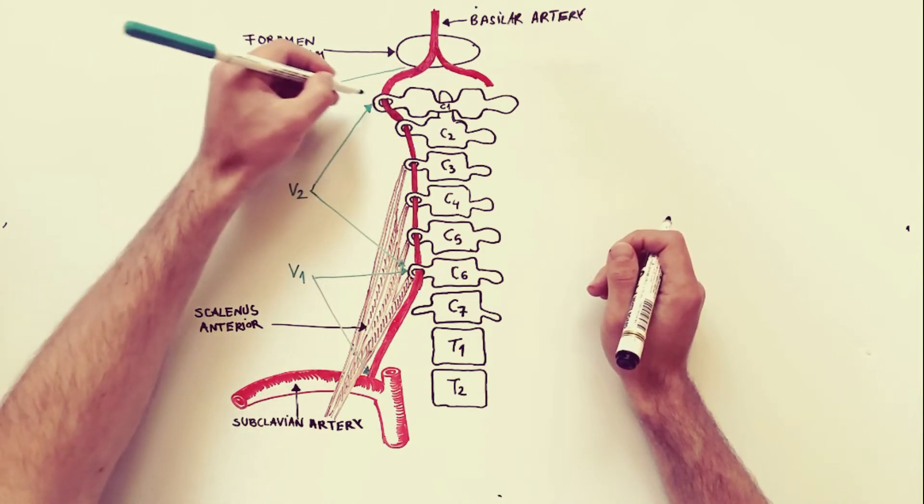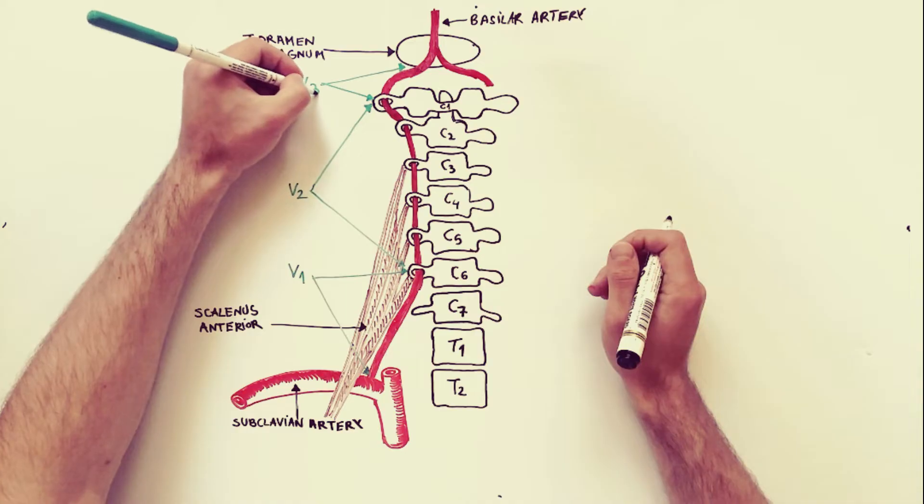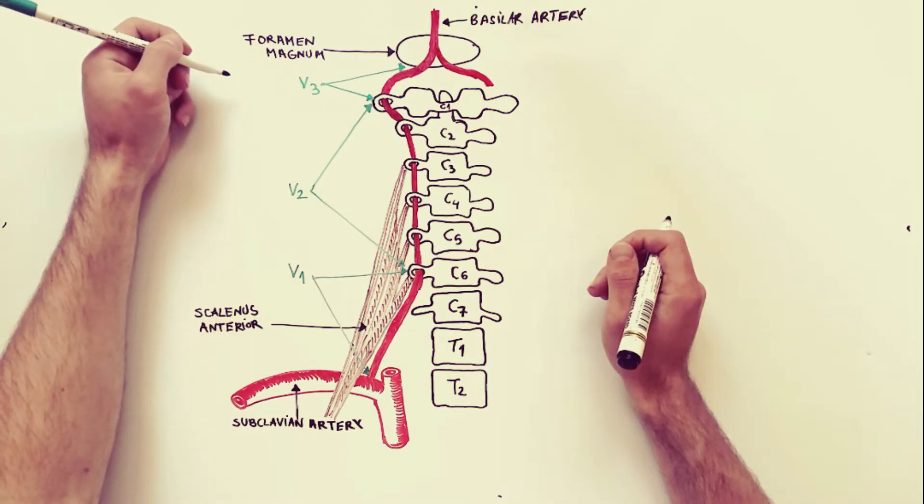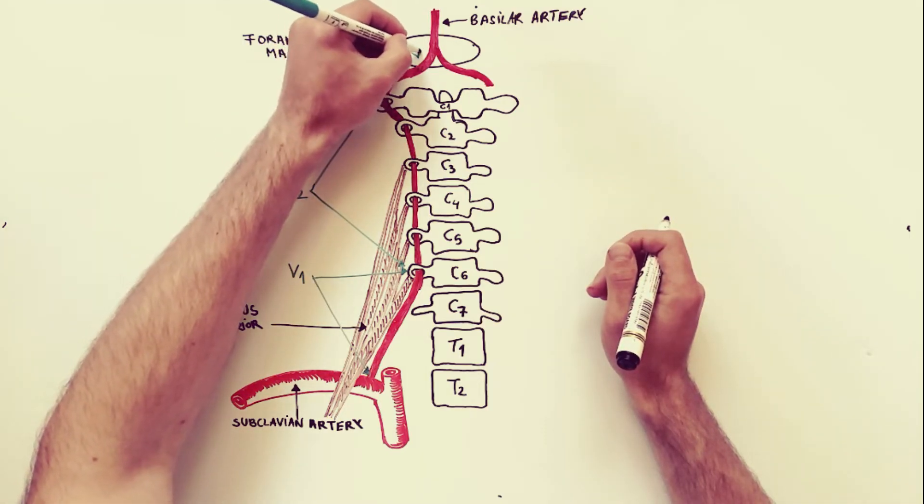The third part, noted with V3, or the suboccipital part, extends from the foramen transversarium of C1 vertebrae to the foramen magnum of the skull. This part lies within the suboccipital triangle.